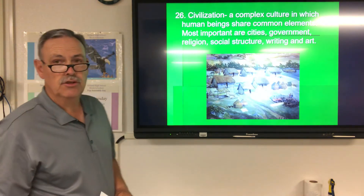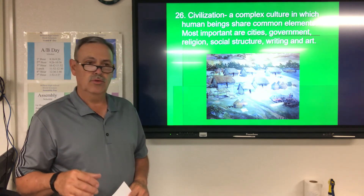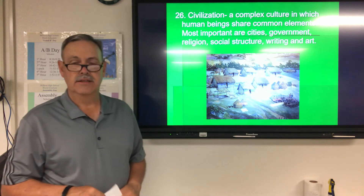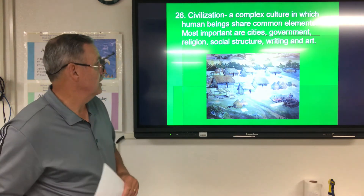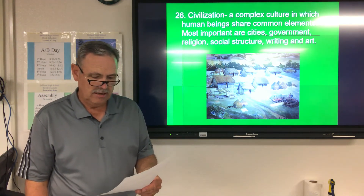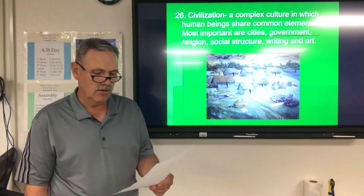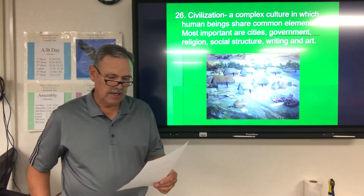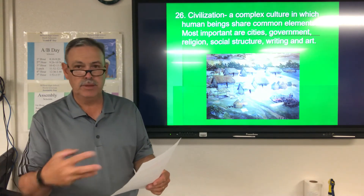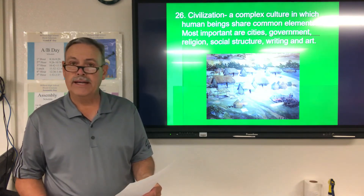This class is called World Civilizations — basically a world history class. There are certain features or characteristics that a group needs in order to be considered a civilization: a complex culture in which human beings share common elements. Some books list seven or eight, but the most important ones are cities, governments, religion, social structure, writing, and art. Religion is very important for people of all ages, from back then to today.